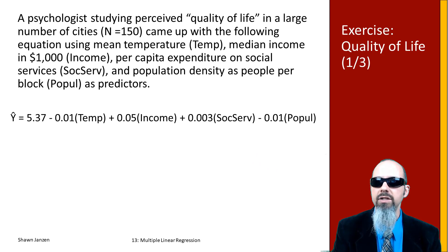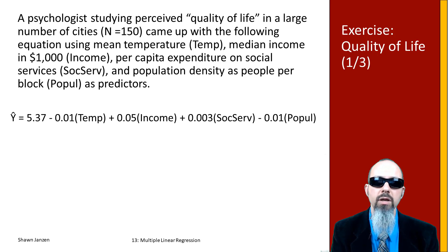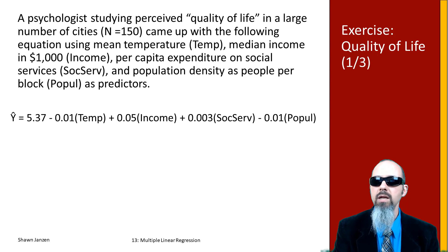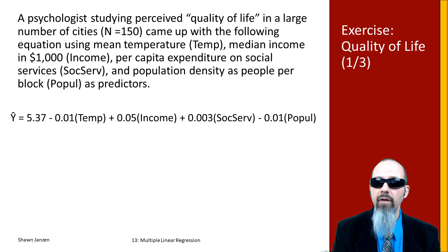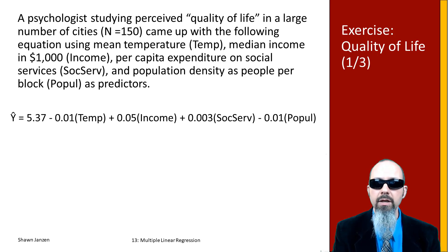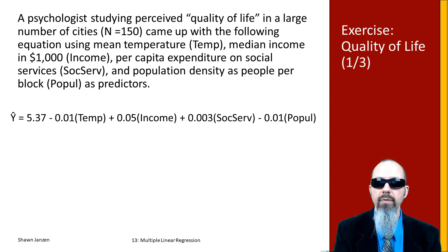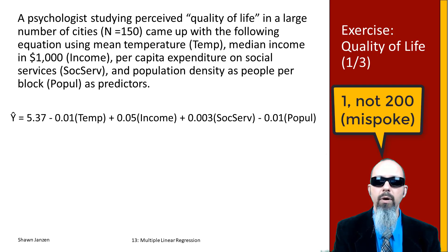So you can imagine that a psychologist studies quality of life, looking at a large number of cities — 150 — and came up with a regression equation. The independent variables are mean temperature (temp), median income for every $1,000 (income), per capita expenditure on social services (soakser), and population density (popuel), where population density is measured per 200 people per block.